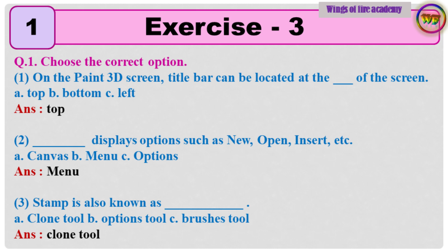Question 2: Dash displays options such as New, Open, Insert, etc. A. Canvas, B. Menu, C. Options. Answer: Menu.